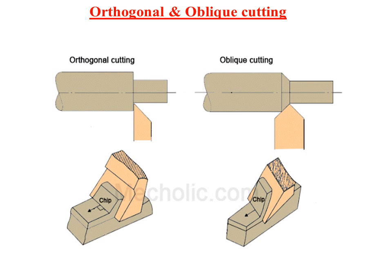Looking at the figure for these two methods: in orthogonal cutting, the tool cuts perpendicularly to the work piece. In oblique cutting, the tool is set at an angular — an acute angle — to the work piece.